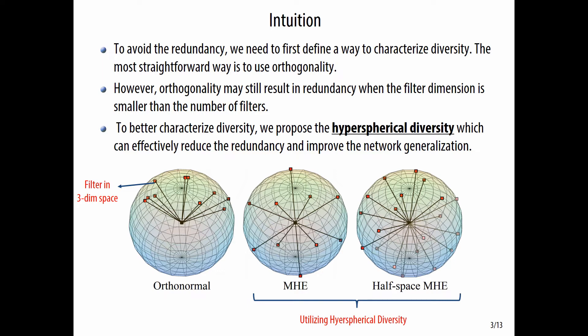To better characterize diversity, we propose hyperspherical diversity that can reduce neuron redundancy and improve network generalization. The figure in the slide illustrates the difference between orthogonality and our proposed regularization that utilizes hyperspherical diversity.